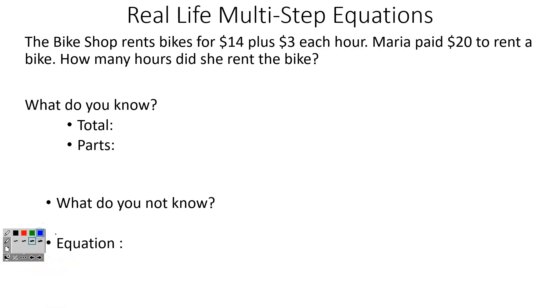So we start with this. The bike shop rents bikes for $14 plus $3 each hour. Maria paid $20 to rent a bike. How many hours did she rent the bike? Well, we know that our total is $20. The parts that we know is that you can rent for $14 and it's $3 each hour. What do you not know? Well, it wants to know how many hours did she rent the bikes. We don't know the number of hours. So I'm going to use H as my variable.